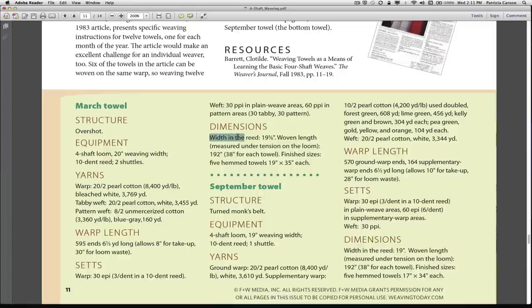The dimensions width in the reed is 19 and 5 sixths, you might as well say 20 inches. The woven length, measured under tension on the loom, is 192 inches or 38 inches for each towel. The finish sizes, you get 5 hem towels, 19 by 35 each.